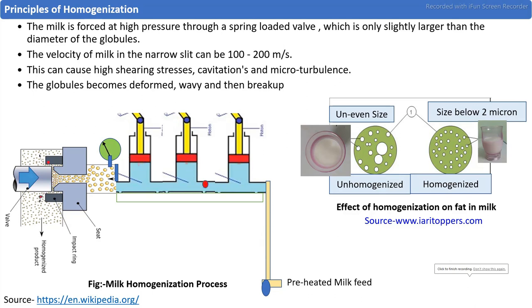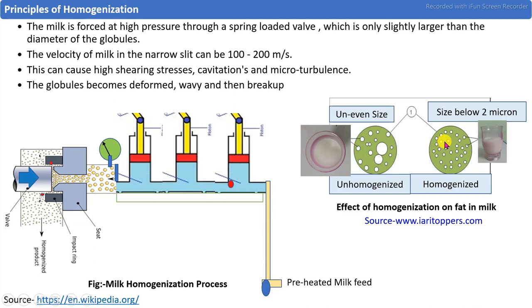What is the basic principle of the homogenization process? In homogenization, milk contains fat globules in the range of 2 to 12 microns. These non-uniform fat globules are converted into uniform size by the homogenization process. The fat globule size reduction is carried out so that they are uniformly distributed, and finally we get a homogeneous mixture.